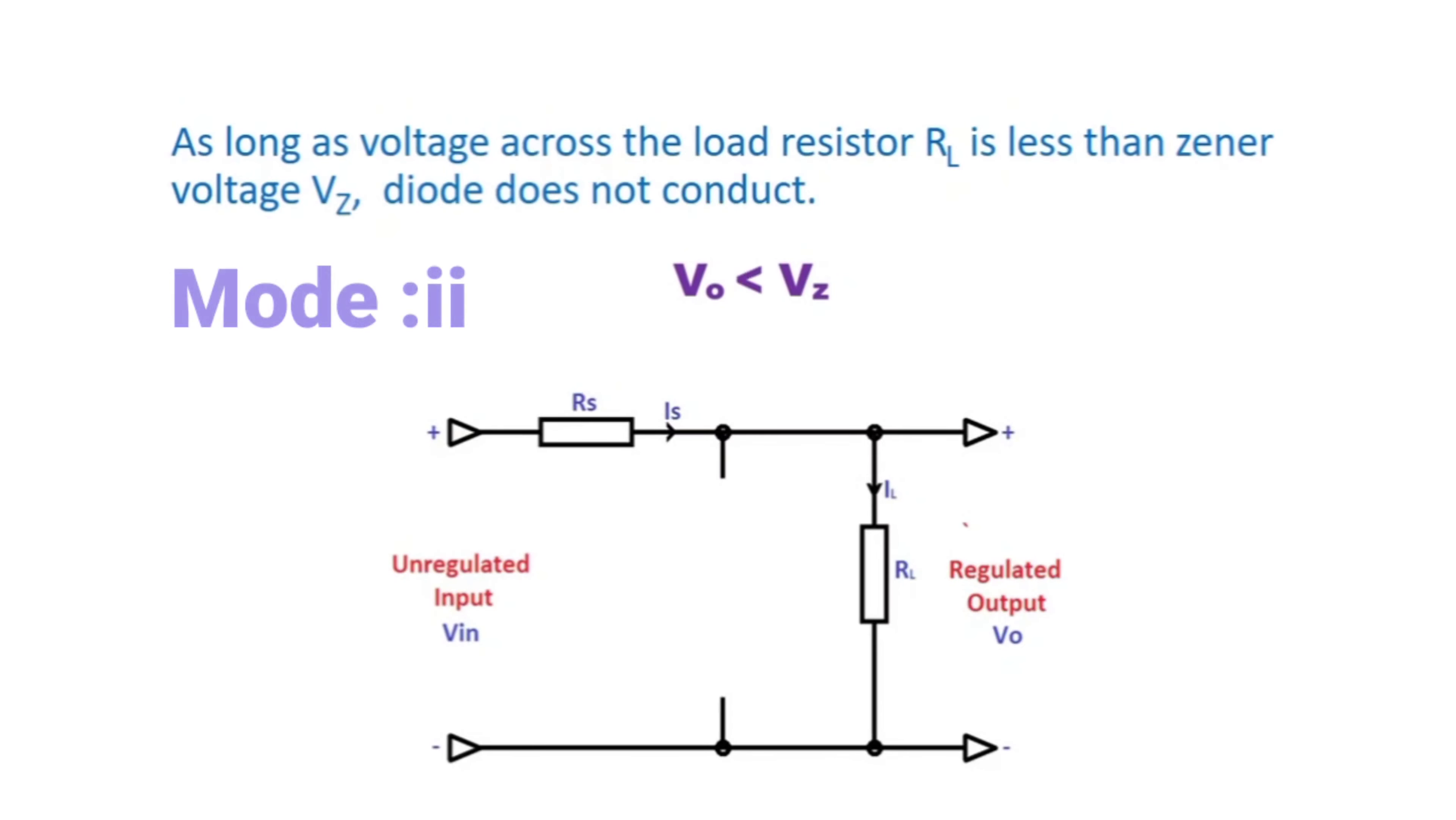In second mode, as long as the voltage across the load resistor RL is less than Zener voltage VZ, the Zener diode does not conduct. That is mode 2, V0 is less than VZ. The first mode is V0 equal to VZ when Zener diode connected. When you remove the Zener diode, when Zener diode is not conducting, at that moment V0 is less than VZ.